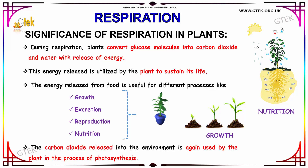The energy released from food is useful for different processes like growth, excretion, reproduction, and nutrition. The carbon dioxide released into the environment is again used by the plant in the process of photosynthesis, during which the plant releases oxygen.